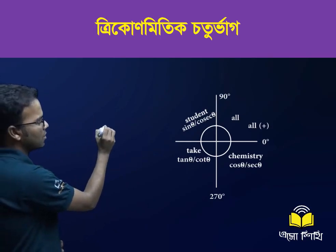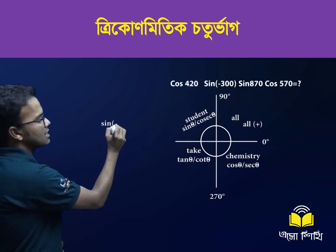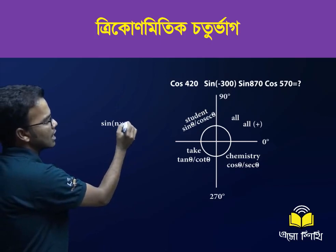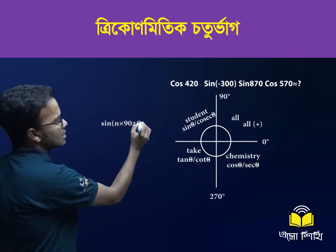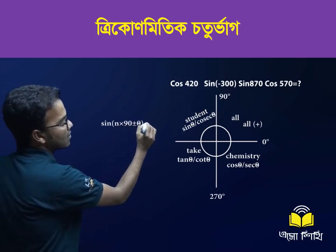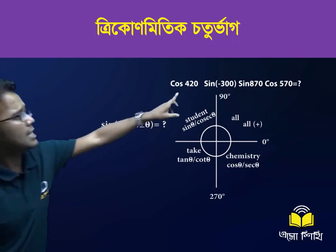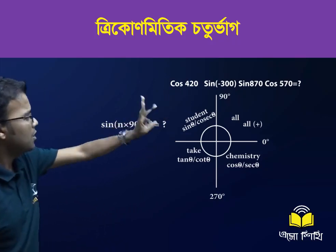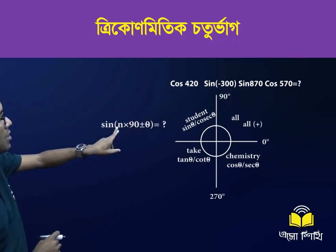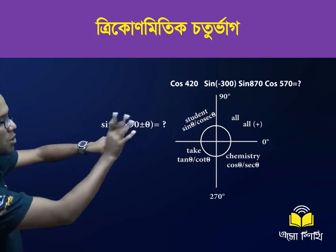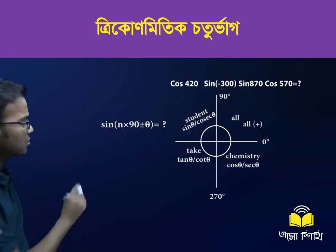This is a formula that we can use: we can use sine of n into 90 plus minus theta. This is the form to normalize.